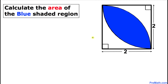Welcome to Pre-Math. In this video tutorial, we are going to calculate the area of the blue shaded region that is inscribed in the given square. The dimension of this square is two units on each side.